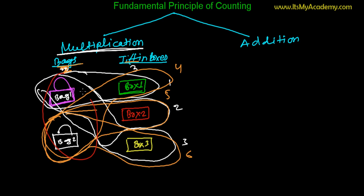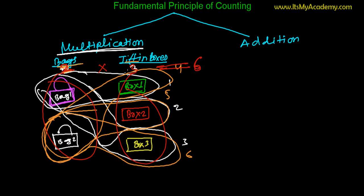Simply, out of the two bags I can select any one, and out of the three tiffin boxes I can select any one. So two times three equals six — there are six ways of selecting one bag and one tiffin box out of two bags and three different boxes. This is the Fundamental Principle of Counting, and specifically the Fundamental Principle of Multiplication.